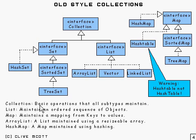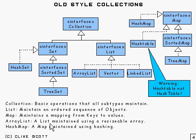Right at the top of the hierarchy we've got Collection, which has some basic types of operations that all its subtypes implement. List is an ordered sequence of objects. Map is a mapping from keys to values — you can store a key and its associated value, remove them, and look up a particular value based on its key.